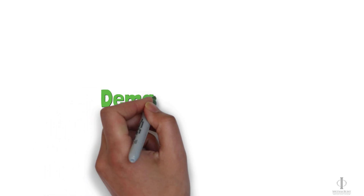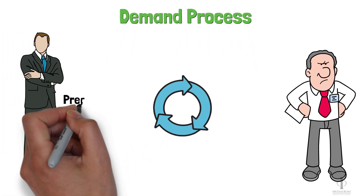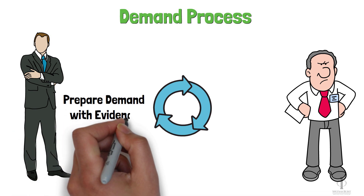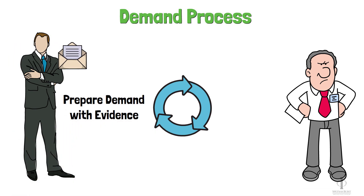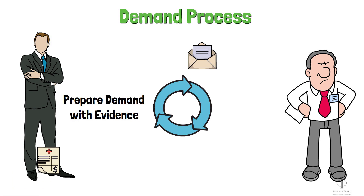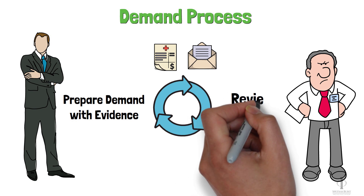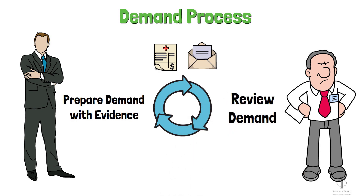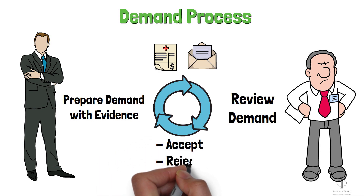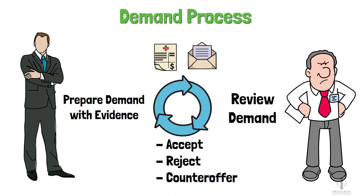Here's how the demand process works. We will prepare a demand letter and compile evidence to support your claim. Then we will send the demand letter and supporting documents to the defense with an offer to settle your case. After that, the defense will review the demand letter and the supporting documents. Then the defense will either accept the demand, reject it, or provide us with a counteroffer.